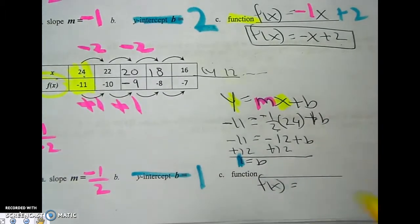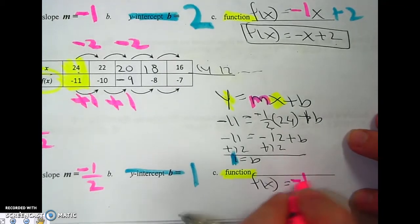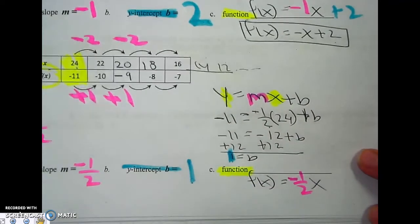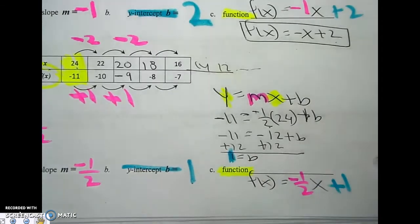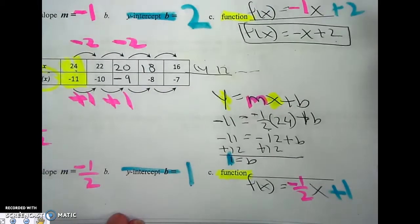Now I can write my function. F of x equals. Let me show that. Negative 1 half. x. Plus 1. Okay. So that's what we're doing today. All right. Let's turn the page and see if there's another one.